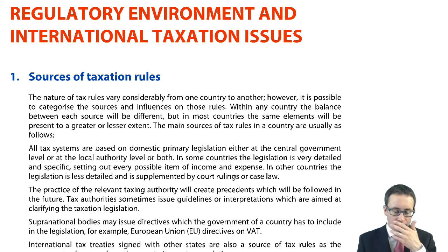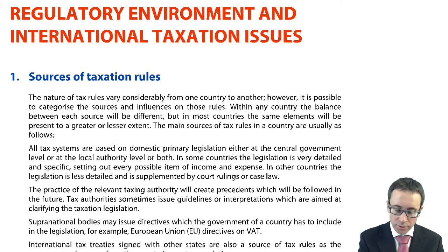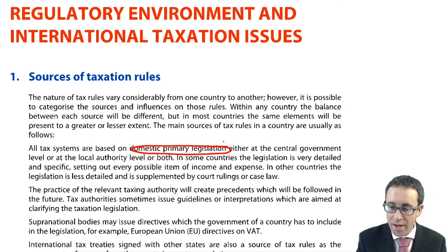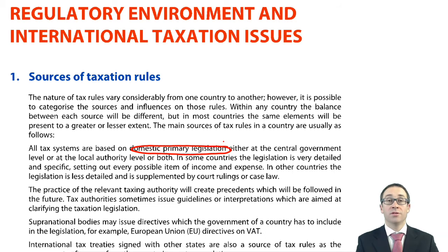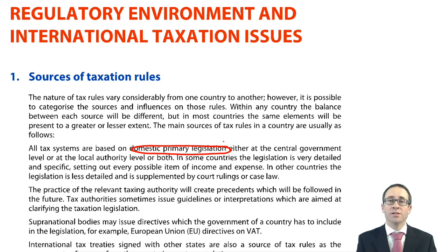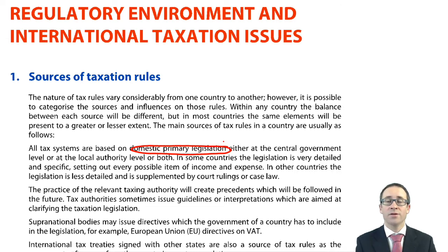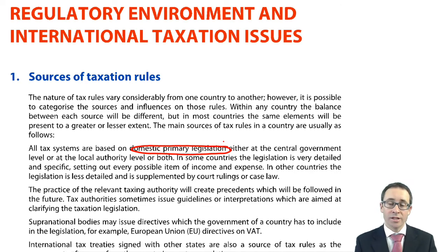Sources of tax rules — essentially, where do they come from? Well, the majority of the rules come from your domestic legislation. In the UK, our government has put together what's referred to as the Finance Act, and the Finance Act gets updated every single year. That will include all the rules about companies' income tax, capital gains that companies make, and also updates to the tax on your own employment — the income that you generate there. So the main source of tax rules is from your government.